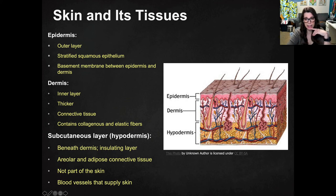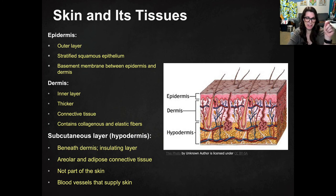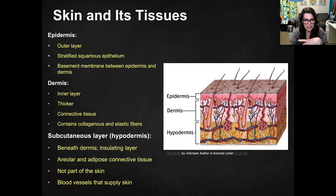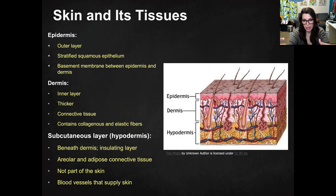And then there's the subcutaneous layer, which is technically below the dermis. Remember, the cutaneous membrane is the skin, so subcutaneous means below that. The hypodermis is beneath the dermis and it's an insulating layer made of areolar and adipose connective tissue. It's technically not part of the skin, but it's always included in these diagrams. It's important because that's where the blood supply that actually feeds the skin is located.